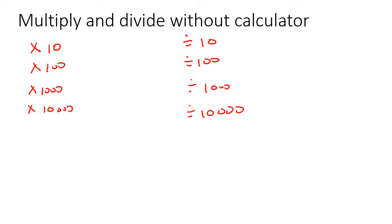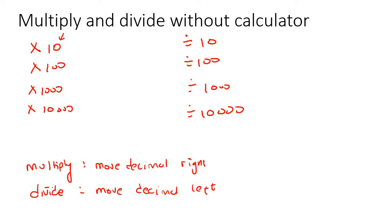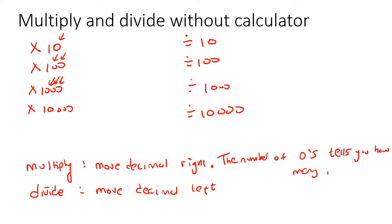The way it works is: when you multiply, you move the decimal right. And when you divide, you move the decimal left. The other thing to know is that when these numbers start with a one, you count the number of zeros — that tells you how many places to move the decimal, and that applies for dividing as well.